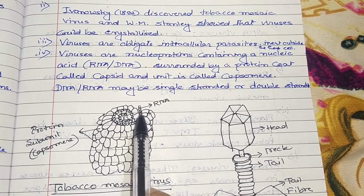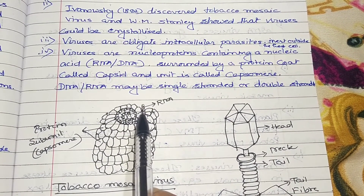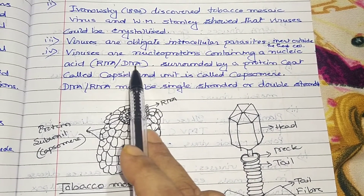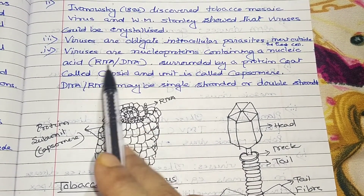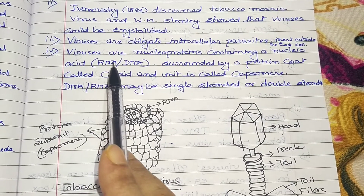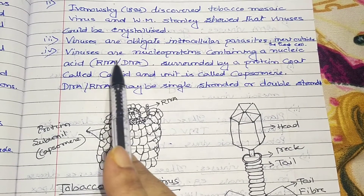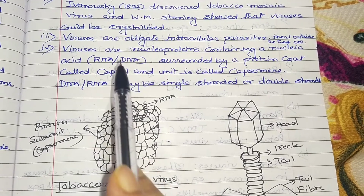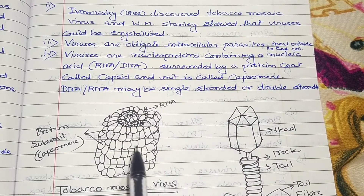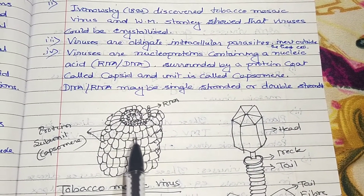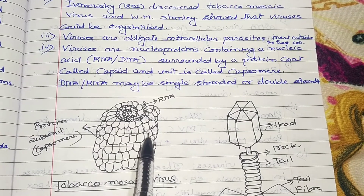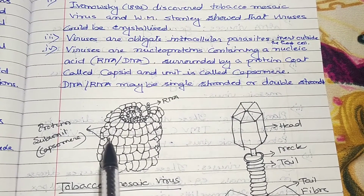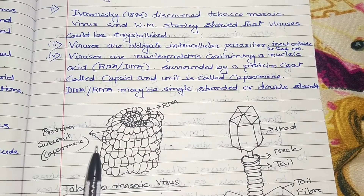The nucleic acid of a virus is either DNA (deoxyribonucleic acid) or RNA (ribonucleic acid). The surrounding protein coat is called the capsid, and the unit of the capsid is called a capsomere. This is why viruses are called nucleoproteins — because they consist of nucleic acid plus protein.